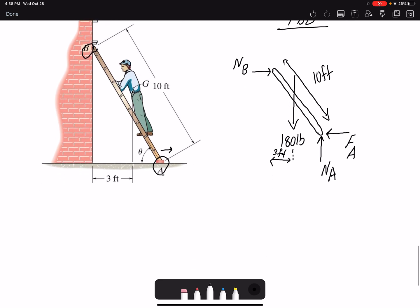If I write my equilibrium equations, I can find the unknowns. I have three equilibrium equations. If I write summation of forces in Y equal zero, I have NA and the weight, so NA would be 180 pounds. I can write summation of forces in X, but it's not going to give me anything. NB would be equal to FA.